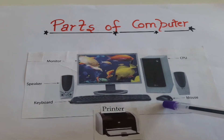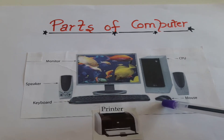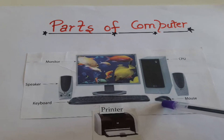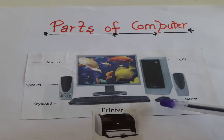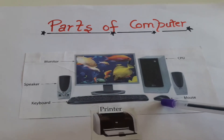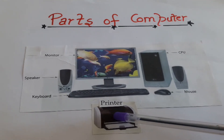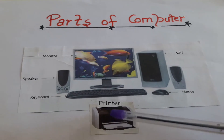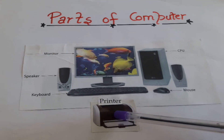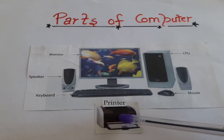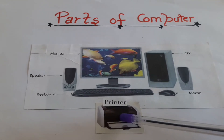Which part is this? This is mouse. We can do clicking. We can click anything through mouse. And what is this? This is printer. We can get the printed pages from here.